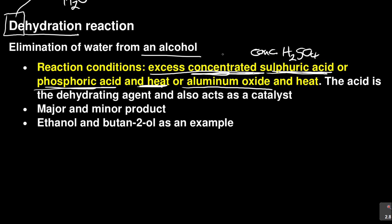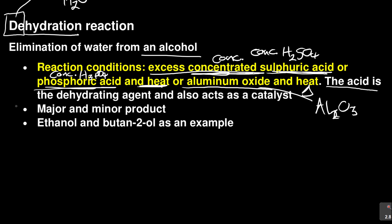Sulfuric acid is H₂SO₄ — but it's concentrated, written as 'conc.' Phosphoric acid is H₃PO₄. Aluminum oxide is Al₂O₃. Don't forget you need heat. The acid is the dehydrating agent — it's the one sucking out water — and it also acts as a catalyst. There are major and minor products.